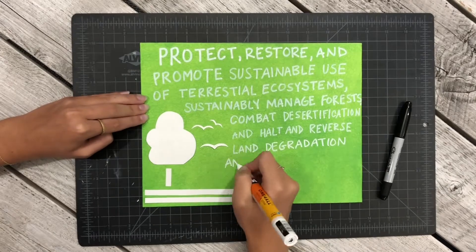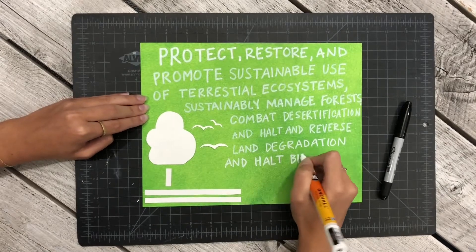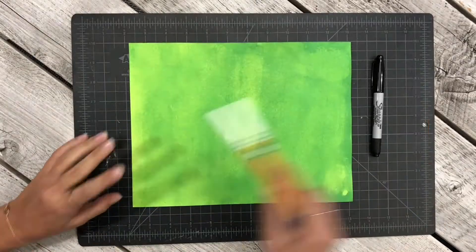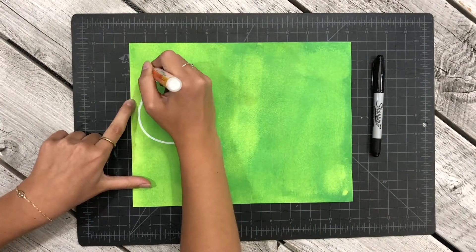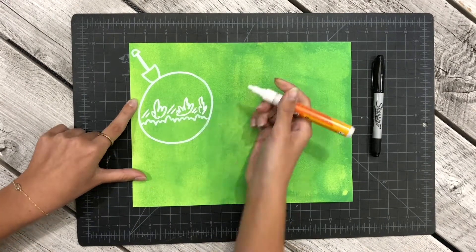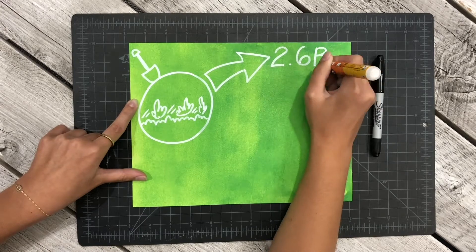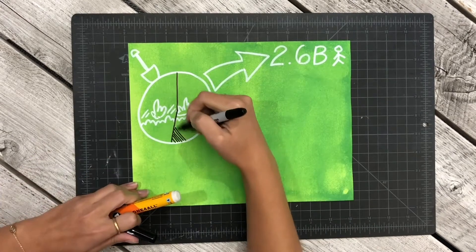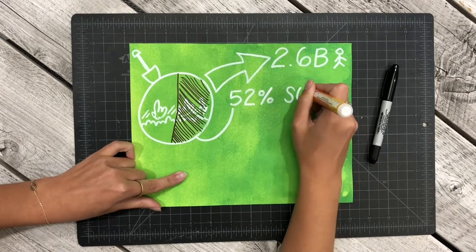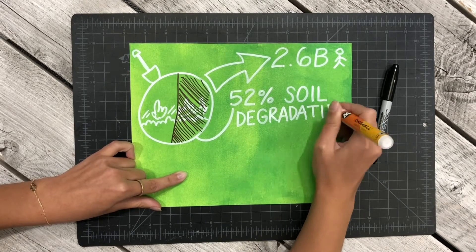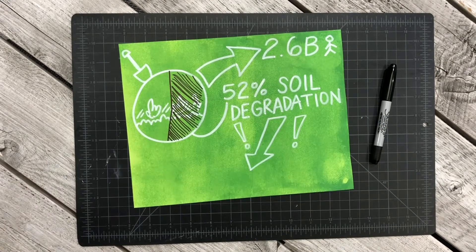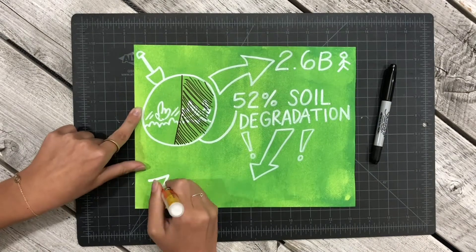Addressing these issues positively affects issues regarding food systems, poverty, and more. Did you know around 1.6 billion people depend on forests for their livelihood? This includes some 70 million indigenous people. SDG 15 is critical for these groups and also affects those indirectly connected to the health of the forests and land.